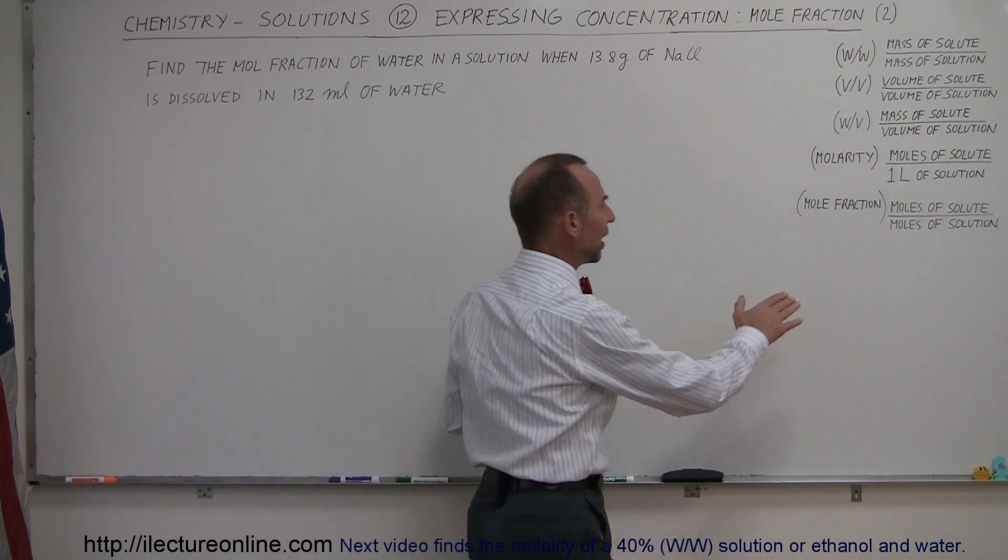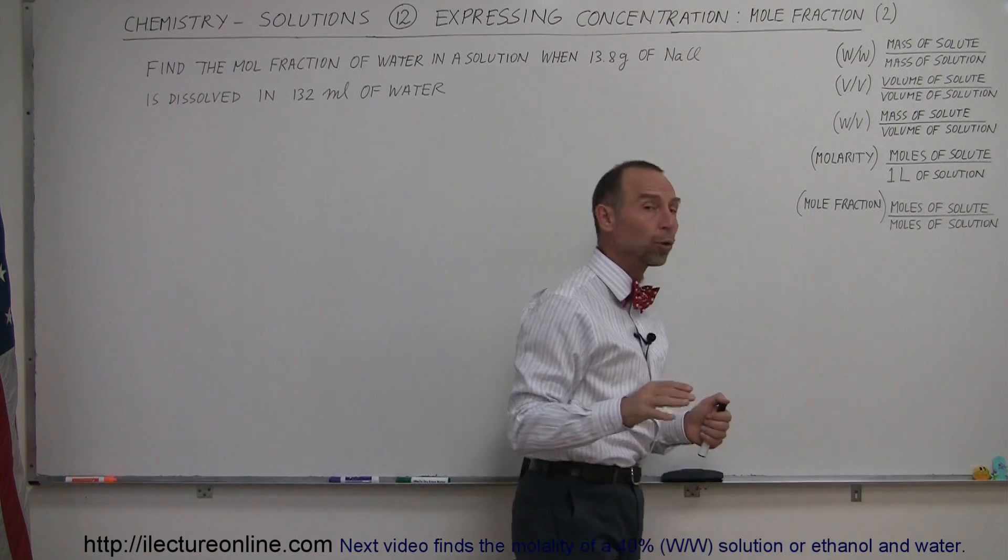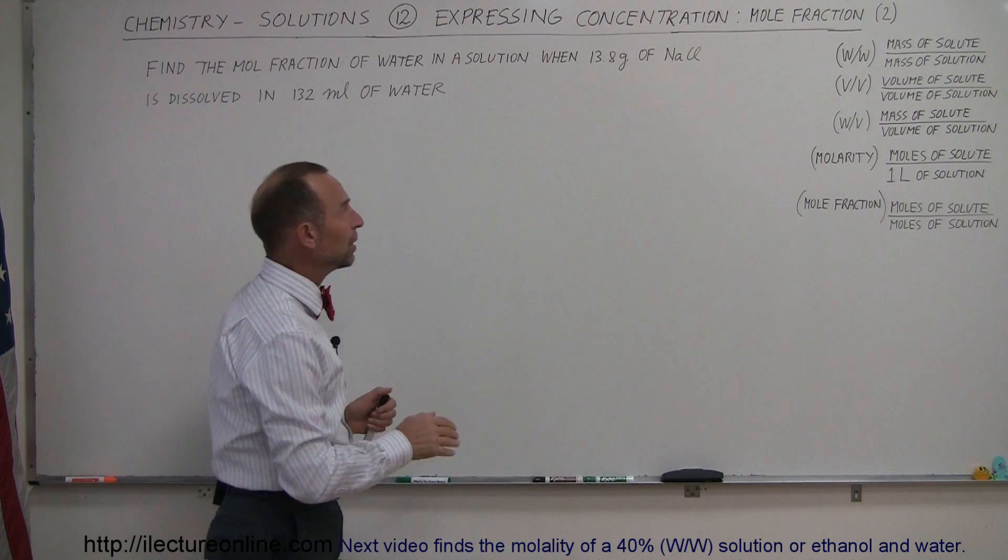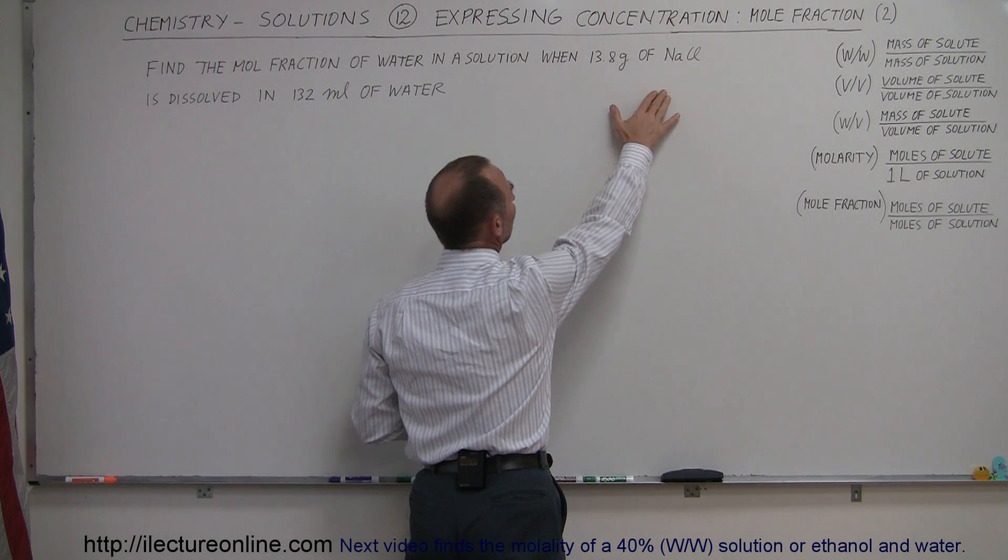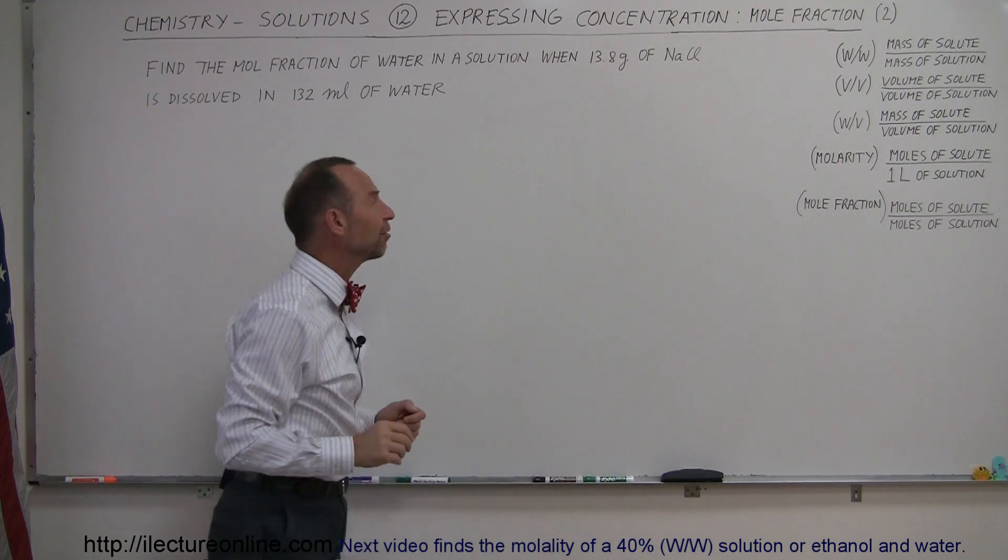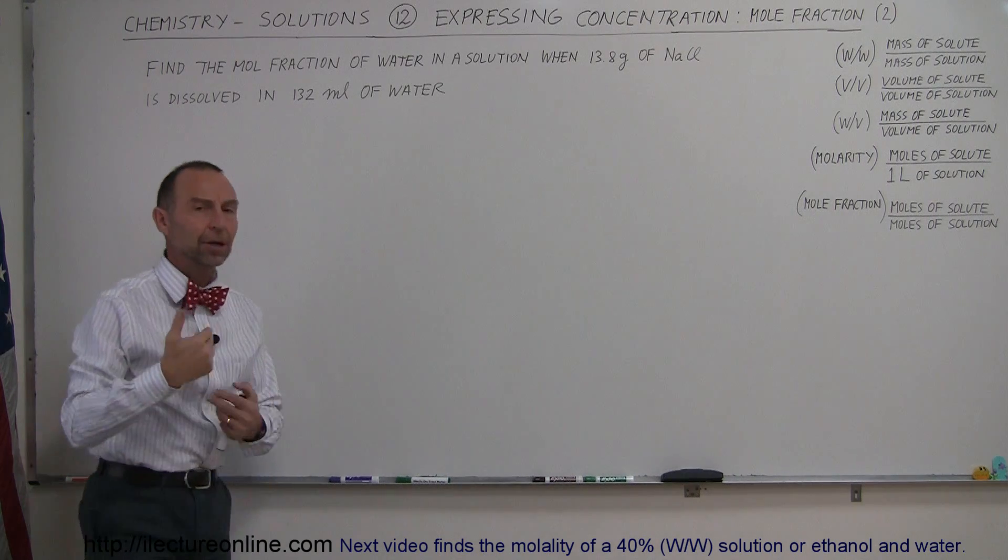Remember, the definition of mole fraction is the number of moles of the solute divided by the number of moles of the total solution, not the solvent, but the total solution. So what we need to do is find out what the molar mass is of sodium chloride and then find how many moles this represents, and then we have to find out how many moles 132 milliliters of water is and then come up with the fraction.